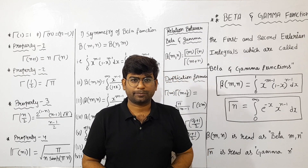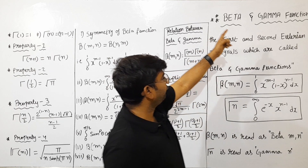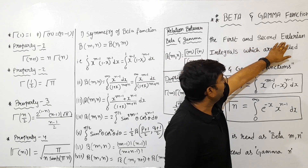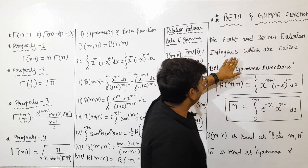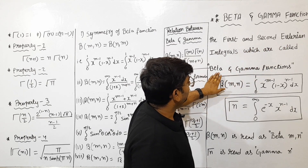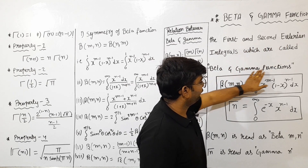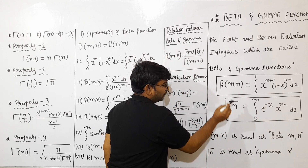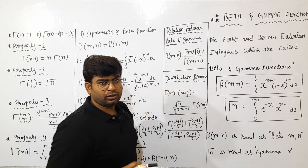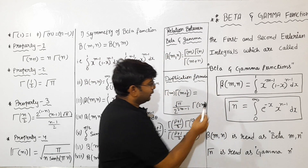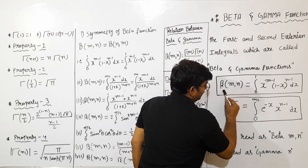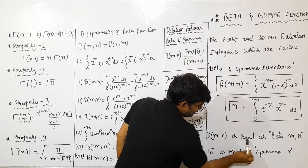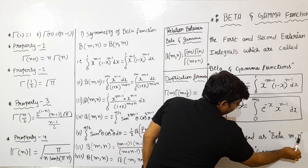All the best. Beta and Gamma Functions are the first and second Eulerian Integrals, which are called Beta and Gamma Functions. So, Beta Formula and Gamma Formula — this is the first and second Eulerian Integrals. We will denote them as Beta(m,n) and Gamma(n).